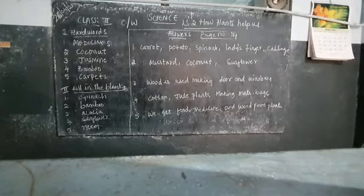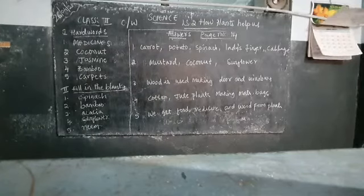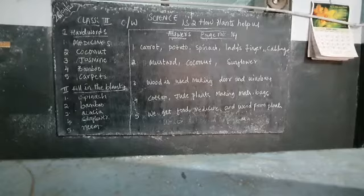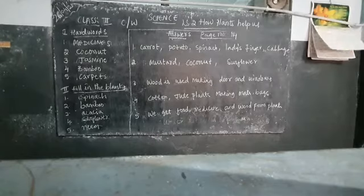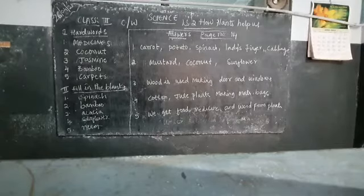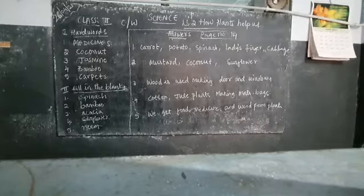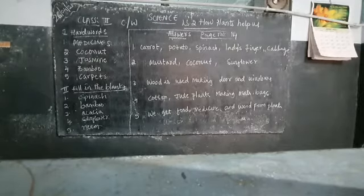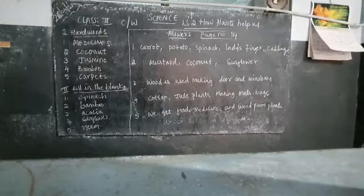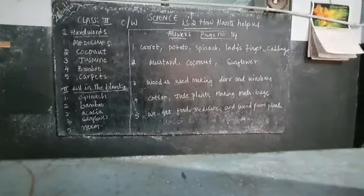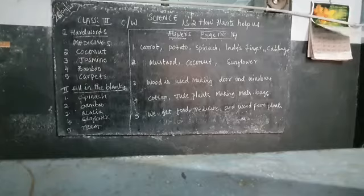Plants give us food grains. Some plants give us cereals like rice, wheat, jowar and corn as food. Plants give us nuts also like walnut, almond, cashew nuts. Oils from plants like mustard, coconut, groundnut and sunflower are crushed to give us oil.